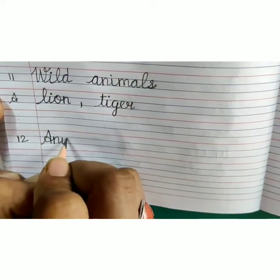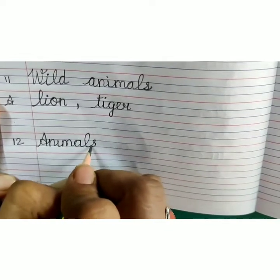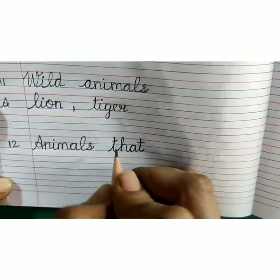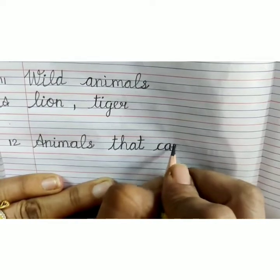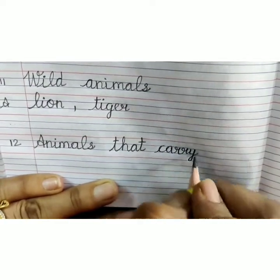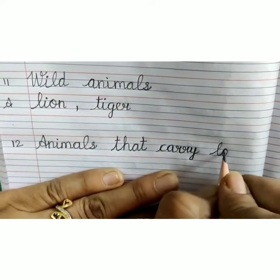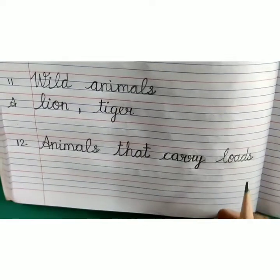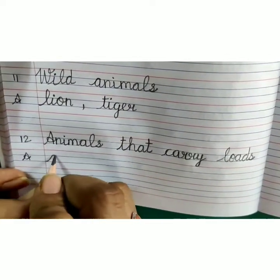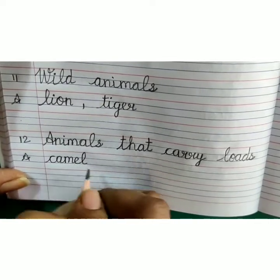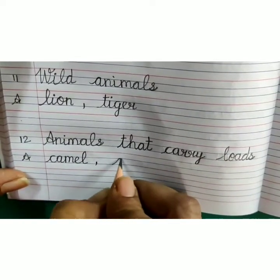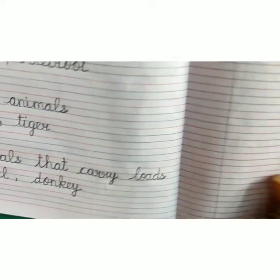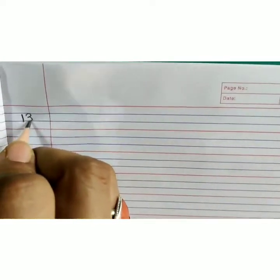Capital A-N-I-M-A-L-S, animals, T-H-A-T, that, C-A-R-R-Y, carry, L-O-A-D-S, loads. Animals that carry loads. Answer: C-A-M-E-L, camel, comma, D-O-N-K-E-Y, donkey. Now on the next page, write number 13.